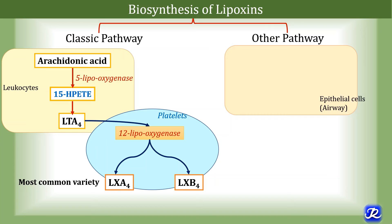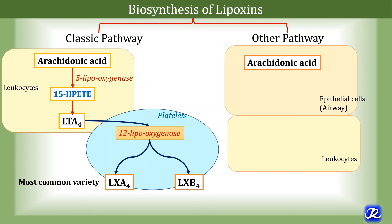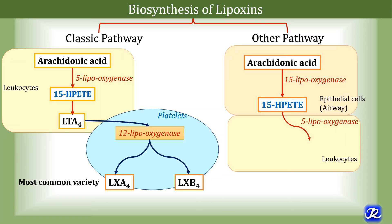The other pathway involves epithelial cells, for example in airways, and leukocytes. The precursor is the same — arachidonic acid — but here the enzyme is 15-lipoxygenase. 15-lipoxygenase acts on arachidonic acid to form 15-HPETE, and later by the action of 5-lipoxygenase in leukocytes it leads to formation of lipoxin A4 and lipoxin B4. These are the important pathways of biosynthesis of lipoxins.